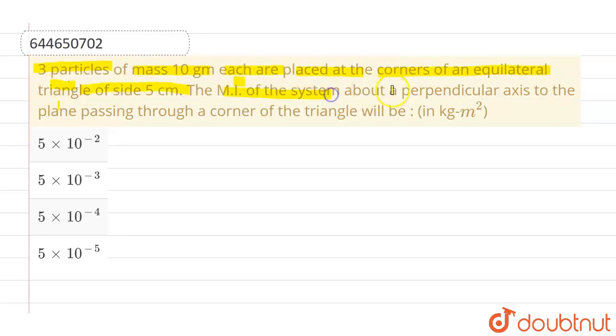The moment of inertia of the system about a perpendicular axis to the plane which is passing through a corner of triangle will be, and we have to find out in kg m². So let me consider an equilateral triangle, let's say this is the equilateral triangle.